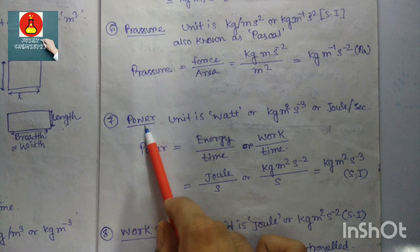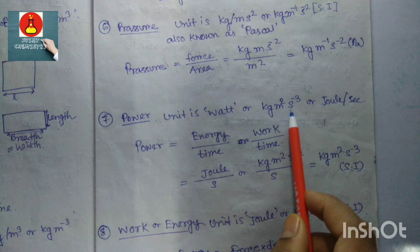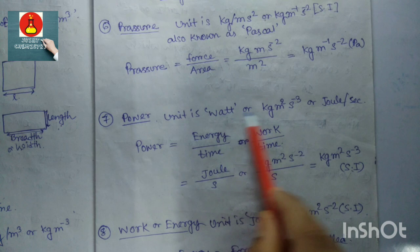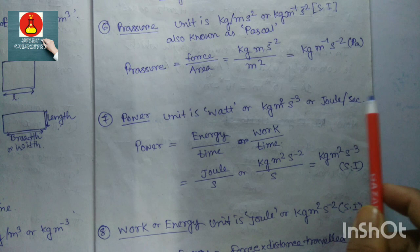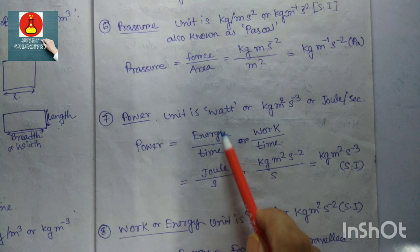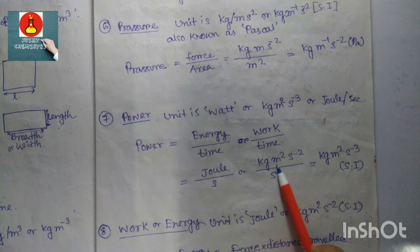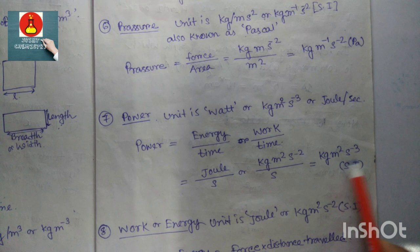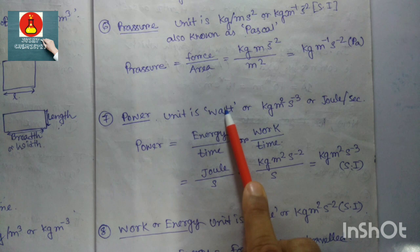Power: the SI unit is watt, which is also kg·m²·s⁻³, also known as joule per second — all are the same. Power equals energy divided by time. Energy has unit joule (kg·m²·s⁻²) divided by time in seconds gives kg·m²·s⁻³, which is the SI unit of power, also known as watt or joule per second.